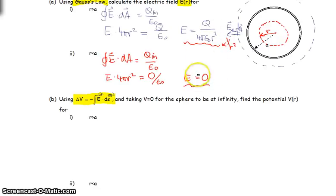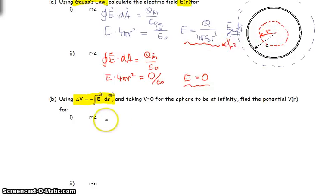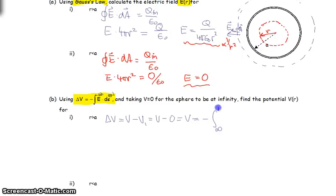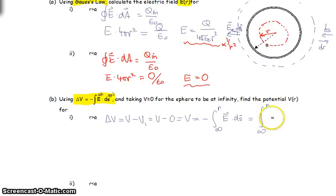So outside we have E proportional to 1 over r squared, and inside it's zero. Now that we have the electric field, we can integrate delta V equals negative integral of E dot dS, taking V equals zero at infinity. I'm integrating from infinity inward, so dS is inward and dr is outward, giving the integral from infinity to r of E dot negative dr.